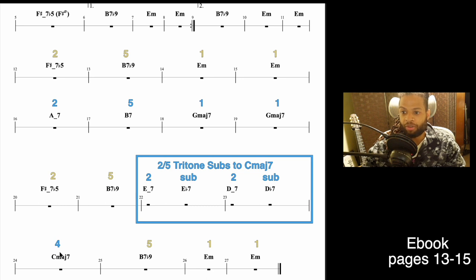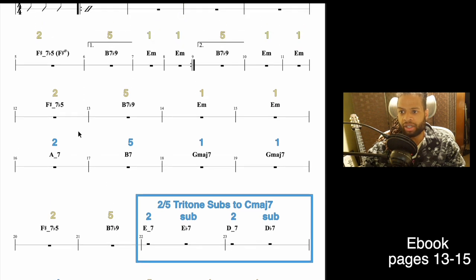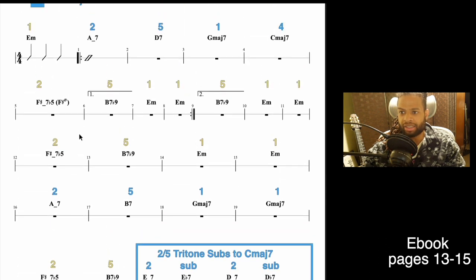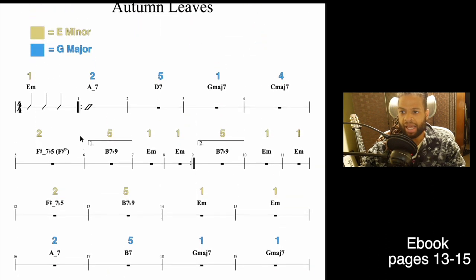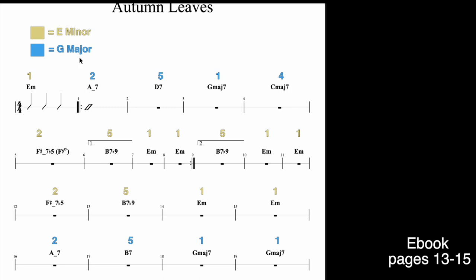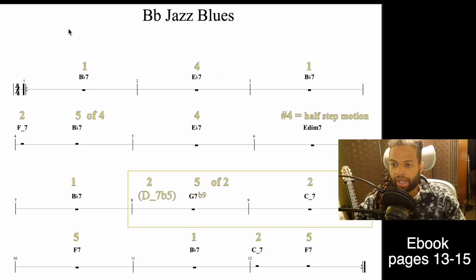From C major, we have a concluding 5 chord and the ending 1 chord. So really this entire song is just 2-5-1s in the major and minor keys of Autumn Leaves.